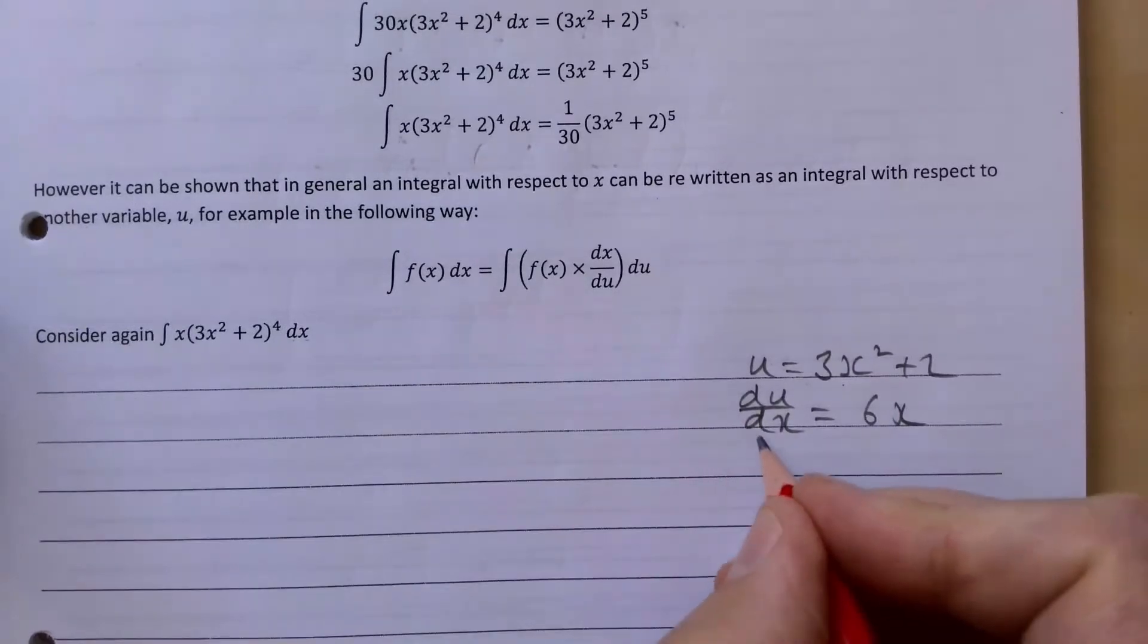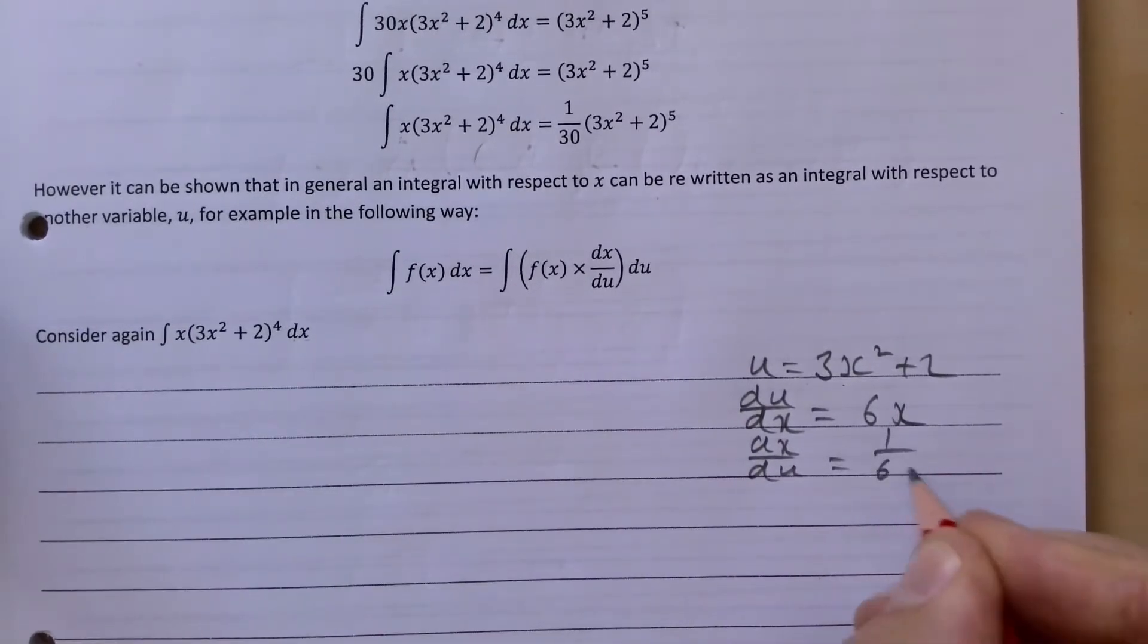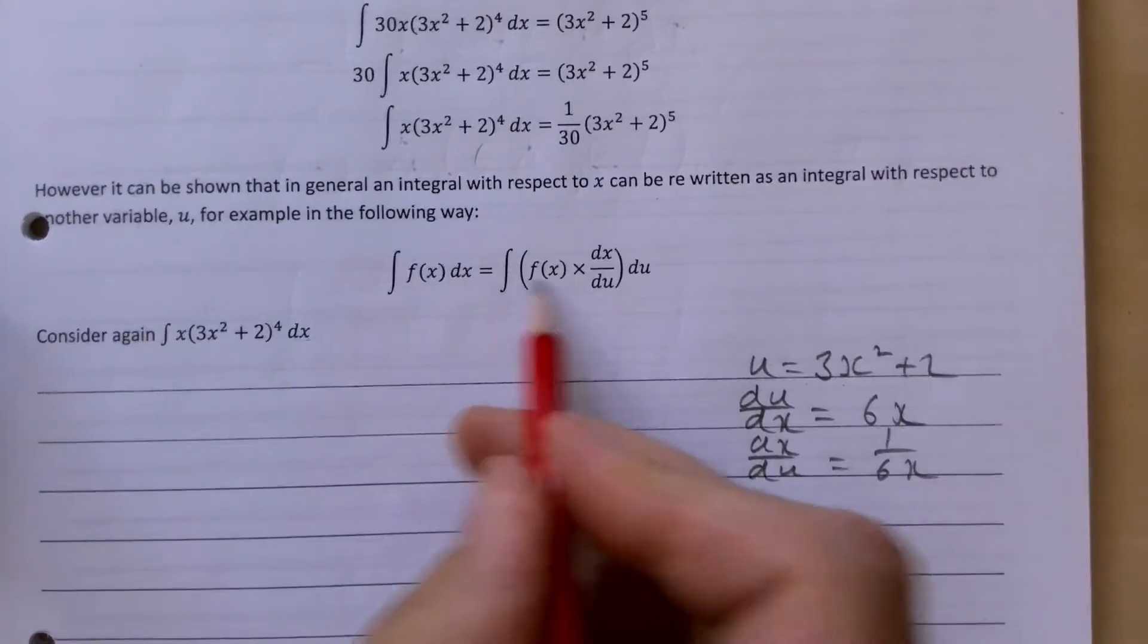And we need dx/du, so we need to flip that. And our dx/du then has 1/(6x).